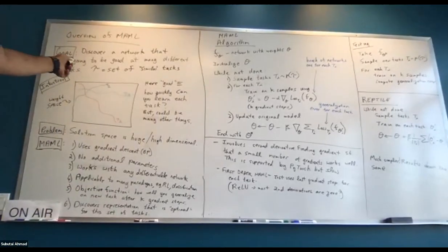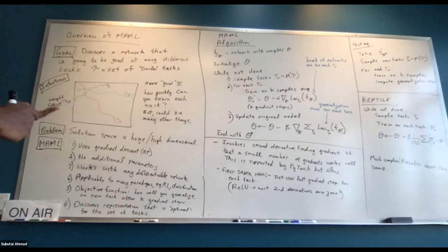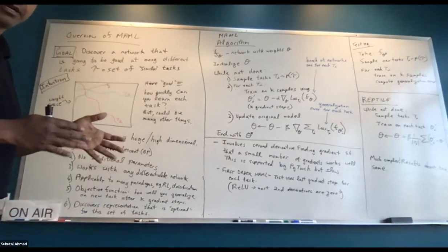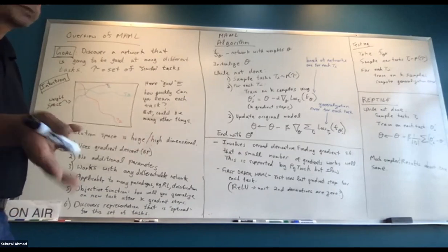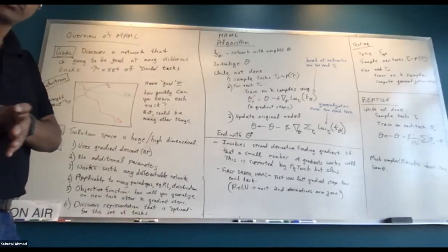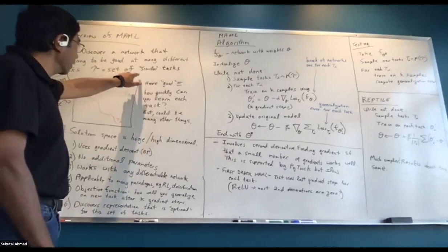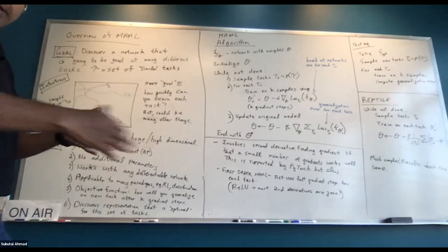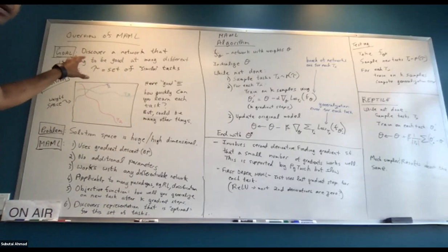I'm going to start with an overview of MAML. The basic goal is to discover a network that is going to be good at many different tasks. Tau is the set of tasks we're going to sample from. A task could be classifying two categories at a time in split MNIST, or in this paper, mini-ImageNet, where you classify some subset of five ImageNet categories as a task.